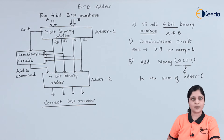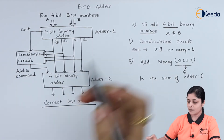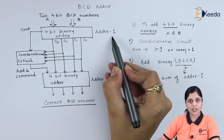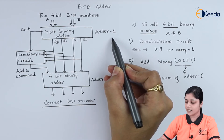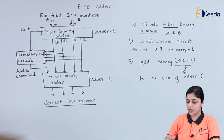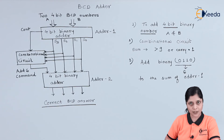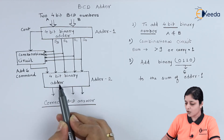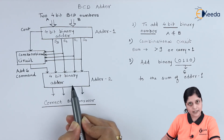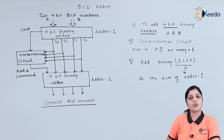So finally you will get your correct BCD answer here. The main point to consider in the BCD adder is: if your sum is less than or equal to nine, then Adder One gives you the answer directly. If your sum is greater than nine or carry is one, the combinational circuit activates and you add six to the answer of Adder One. After that, according to the four-bit binary adder, you will get your final BCD answer.